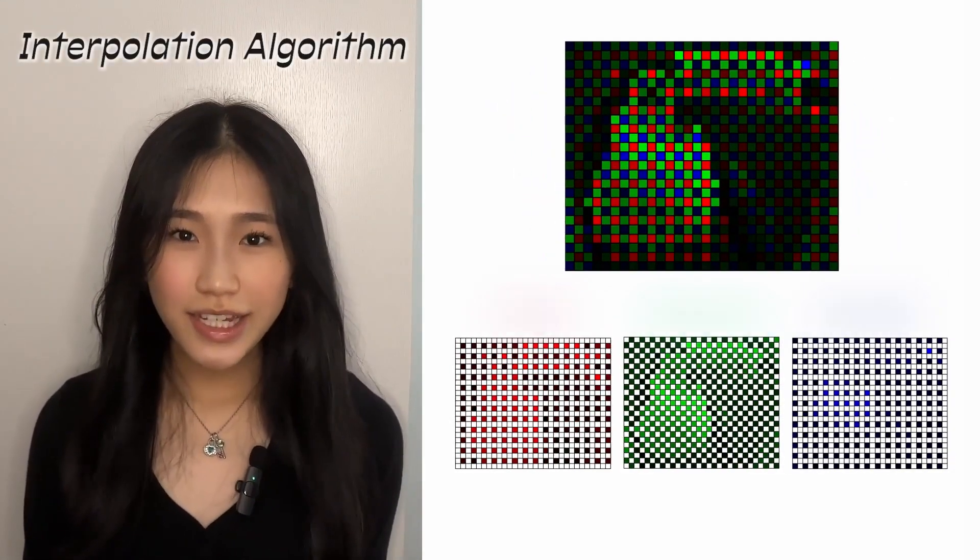No worries. An interpolation algorithm steps in to estimate the other two RGB values. It may not be the true color, but it's a good approximation for sensors smaller than your pinky nail.